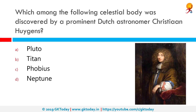Which among the following celestial bodies was discovered by the Dutch astronomer Christiaan Huygens? The correct answer is Titan. Christiaan Huygens was a Dutch physicist, mathematician, astronomer and inventor, widely regarded as one of the greatest scientists of all time and a major figure in the scientific revolution. Titan is not a planet but a moon.